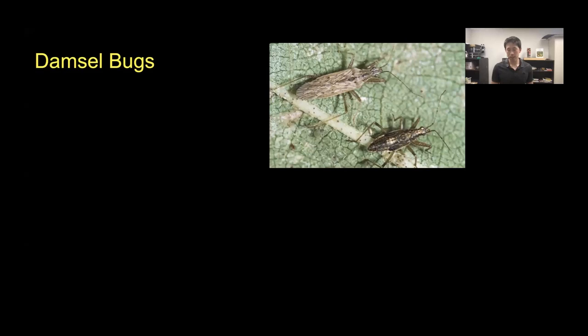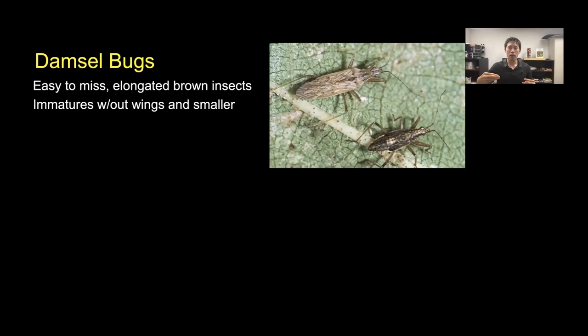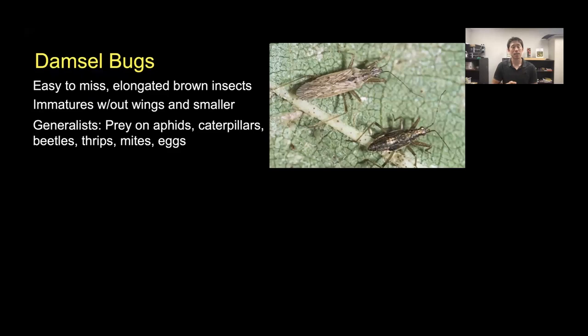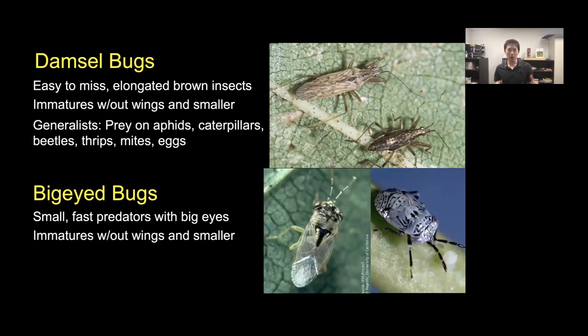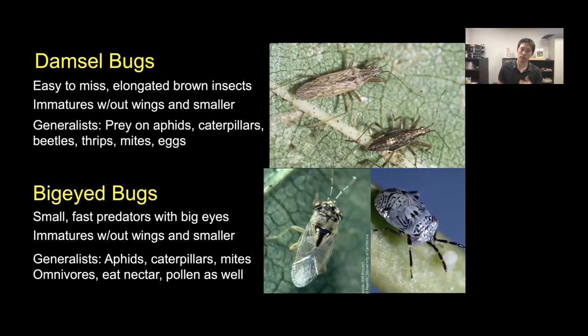Damsel bugs are small, quick, elongated brownish insects—often easy to miss. Both adults and immatures are predators, and immatures look like wingless smaller adults. They prey on aphids, caterpillars, beetles, thrips, mites, and insect eggs. Big-eyed bugs are named for their large eyes on the sides of their heads. Also small and fast, they're generalists feeding on aphids, caterpillars, and mites, but are omnivores too, eating nectar and pollen in addition to insect prey.